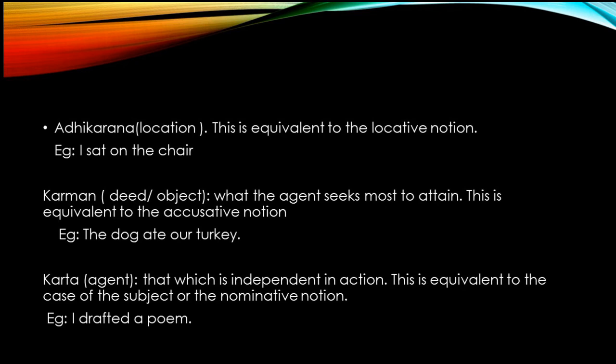Now, Kartakaraka means the agent — the subject — that is equivalent to the nominative notion. That is independent in action; it can stand on its own. For example: 'I drafted a poem' — 'I' is the agent, that is the nominative notion. In Malayalam: 'Dramen Sidae Kandu.' 'Dramen' can stand on its own — it is not 'Dramene' or 'Dramende,' there is no suffix there. It stands on its own. That is the Kartakaraka.